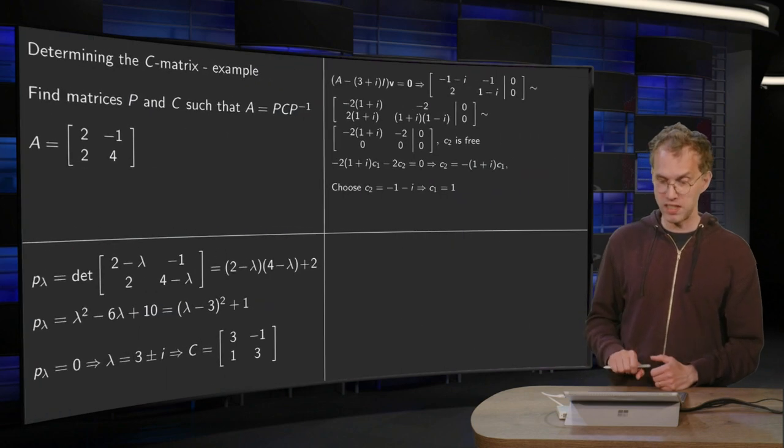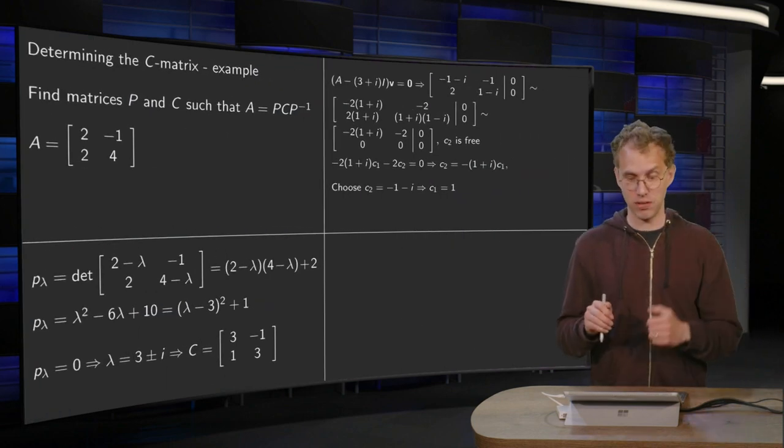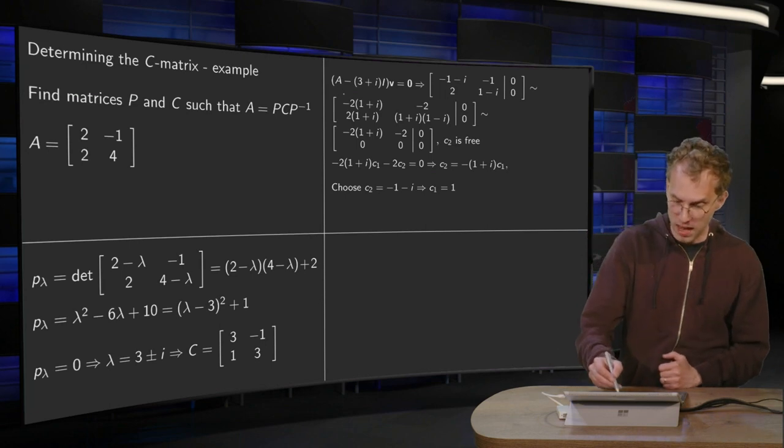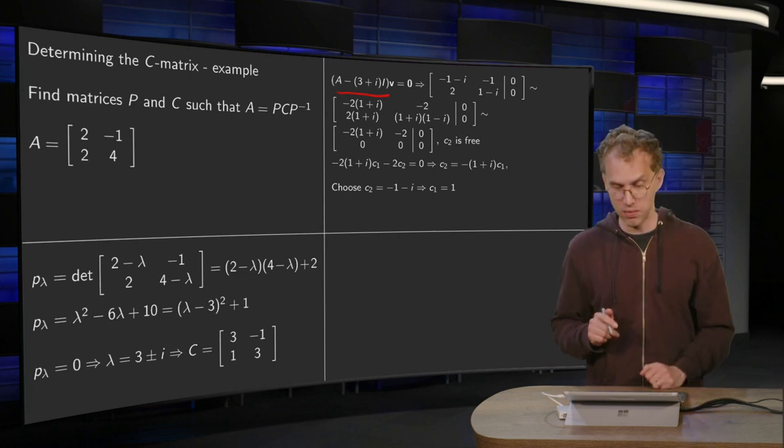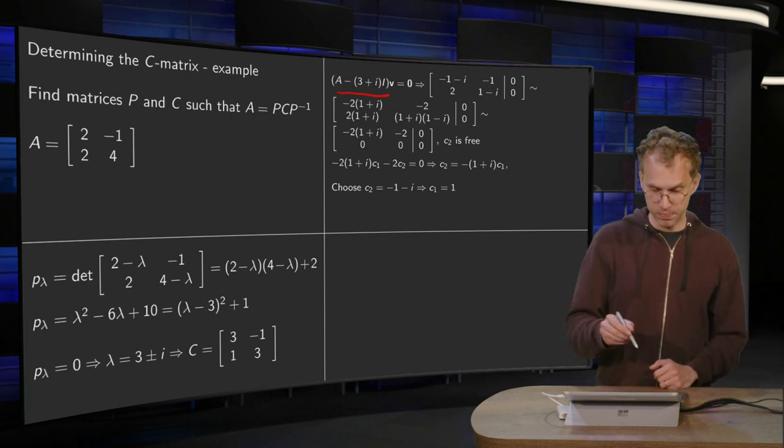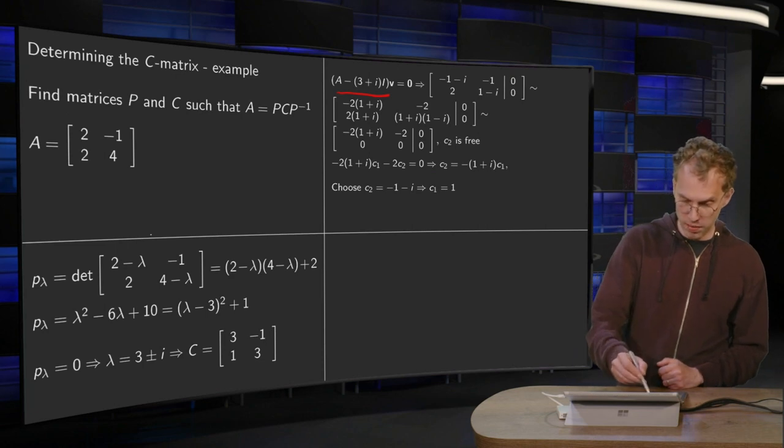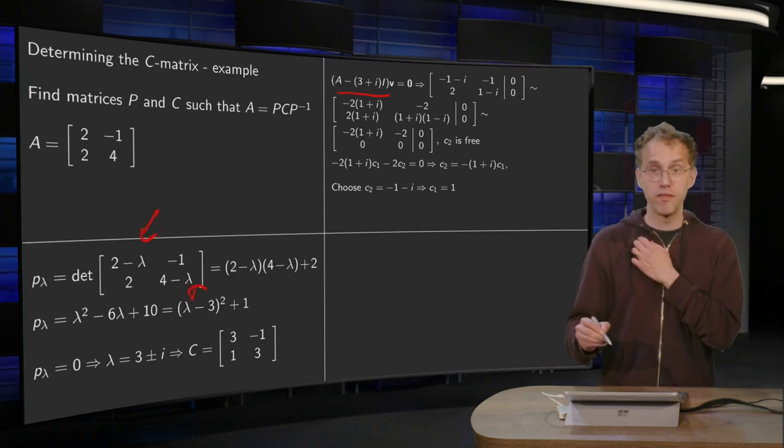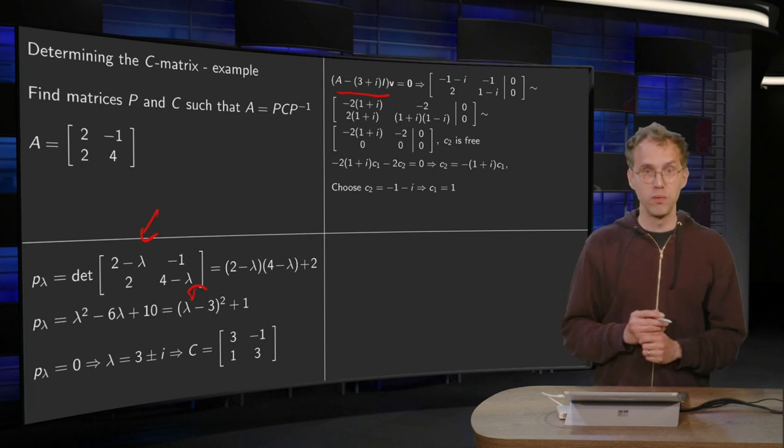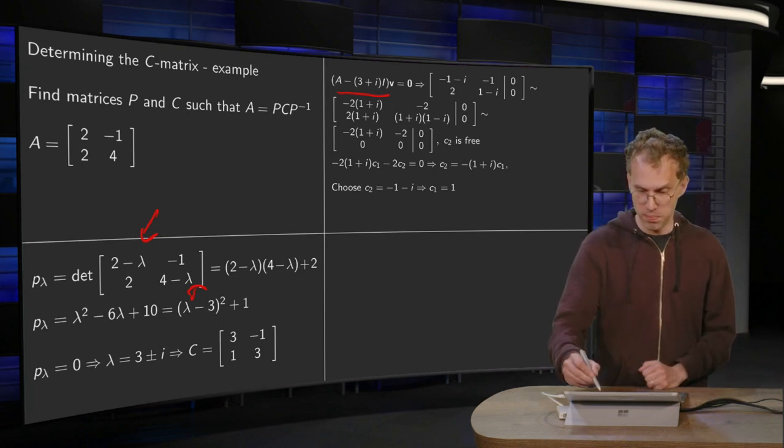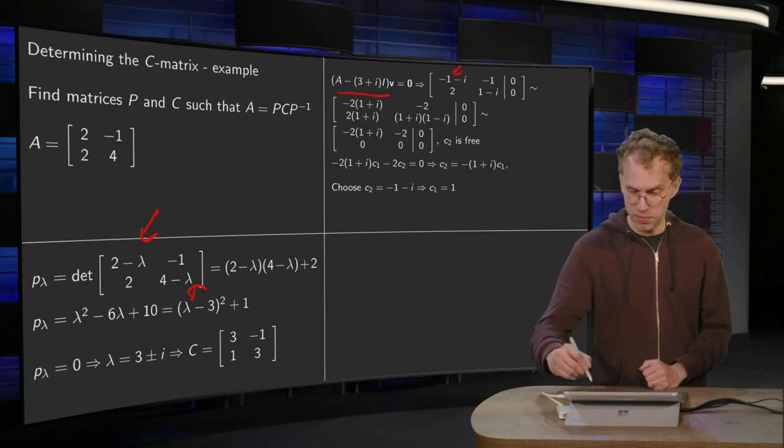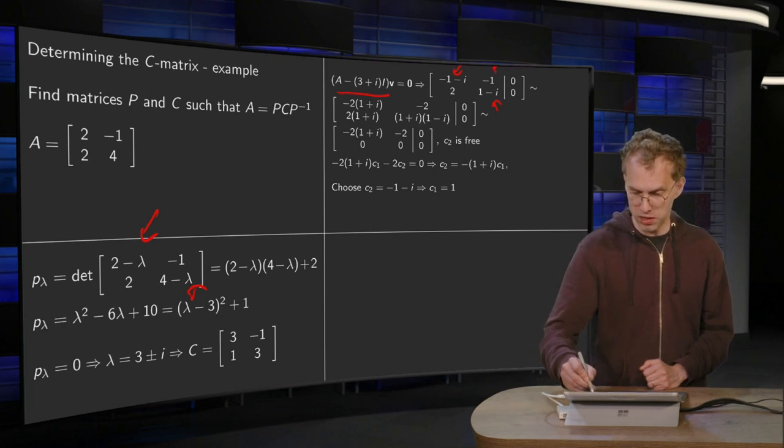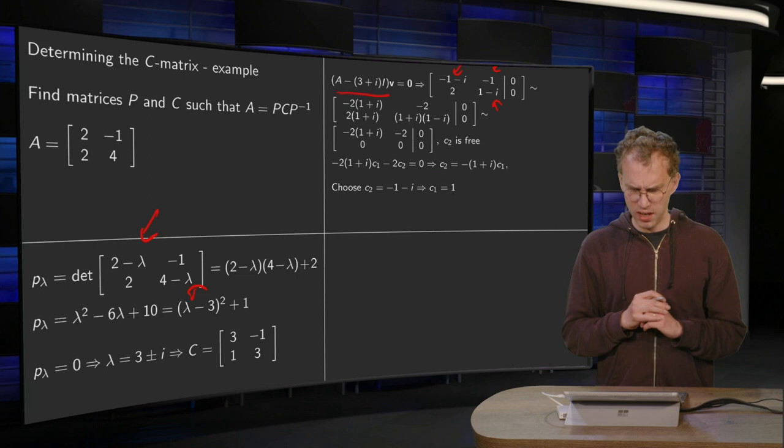Then for the P matrix, we need the corresponding eigenvector. So we compute (A minus λI) here, and we have to solve (A minus λI) times v equals 0. So we compute with the 3 plus i here, and we form the augmented matrix. So 2 minus (3 plus i) gives me minus 1 minus i, and 4 minus (3 plus i) gives me 1 minus i. And the other two remain the same.